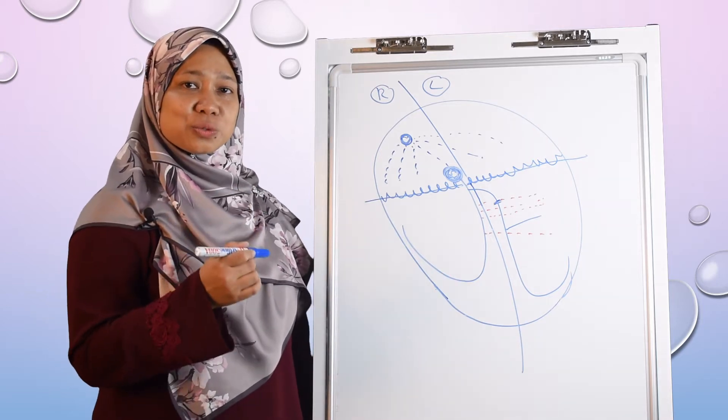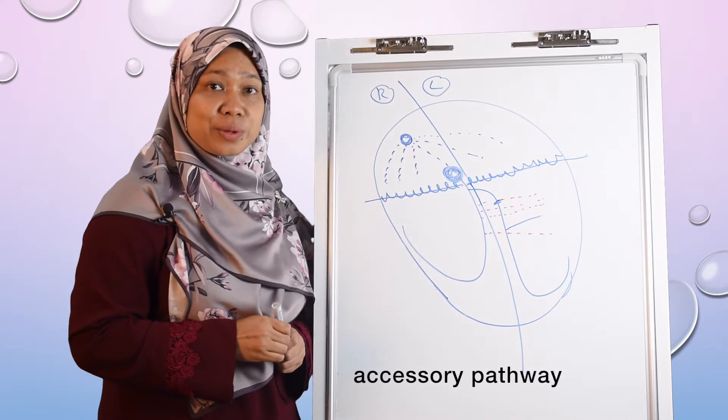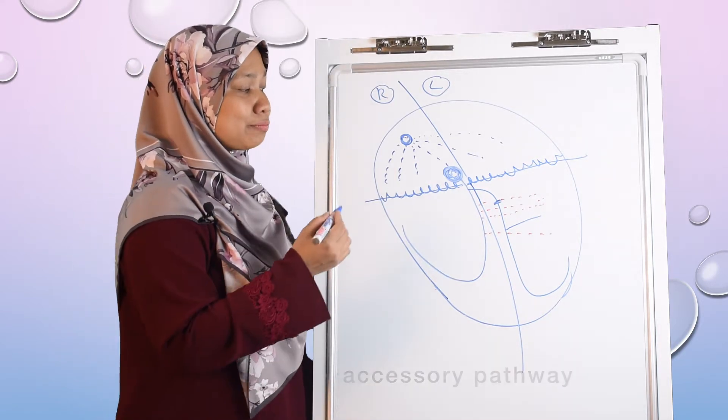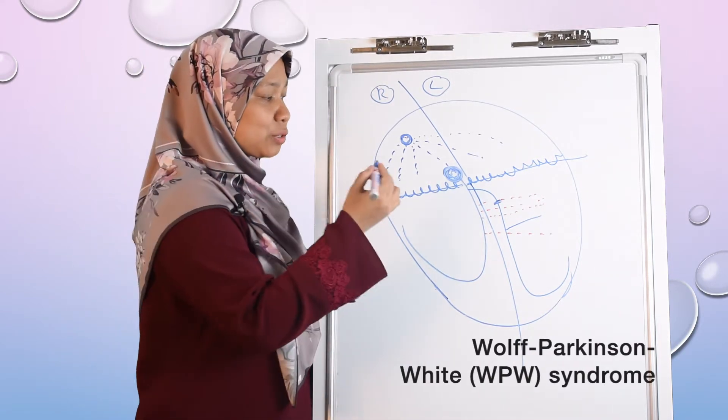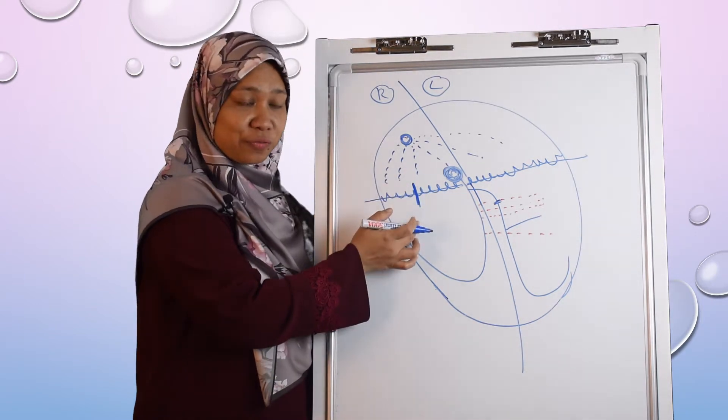Another condition that can cause wide QRS complex is when there is an accessory pathway, like in Wolf-Parkinson-White syndrome. There is an accessory pathway that is communicating the atrium and also the ventricle.